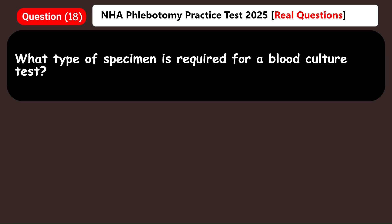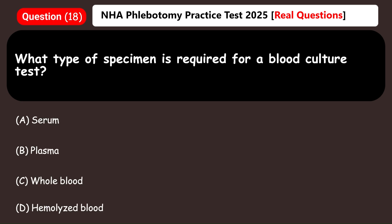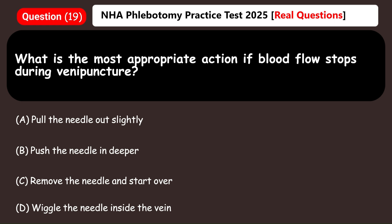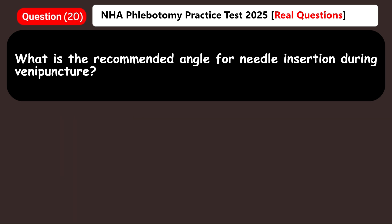What type of specimen is required for a blood culture test? A) Serum, B) Plasma, C) Whole blood, D) Hemolyzed blood. Answer: C) Whole blood. What is the most appropriate action if blood flow stops during venipuncture? A) Pull the needle out slightly, B) Push the needle in deeper, C) Remove the needle and start over, D) Wiggle the needle inside the vein. Answer: A) Pull the needle out slightly.